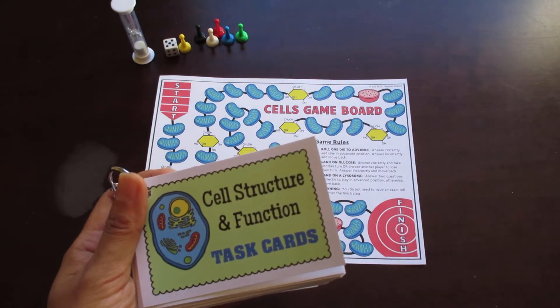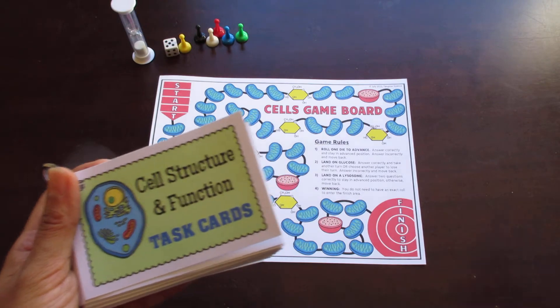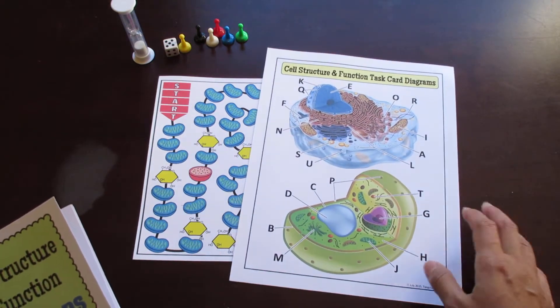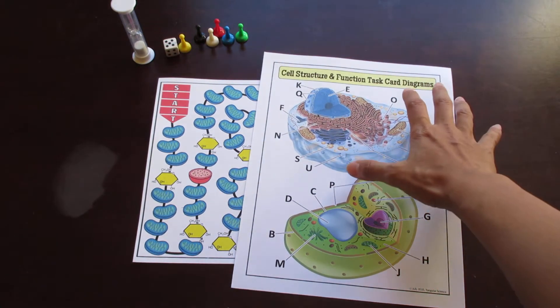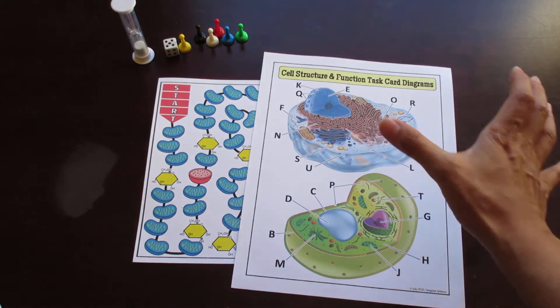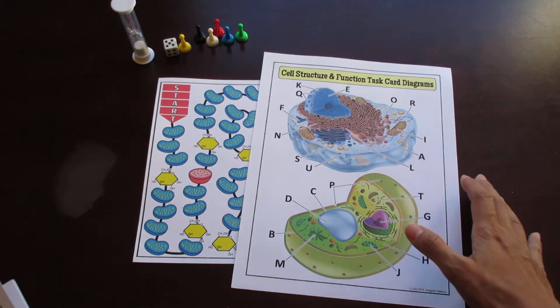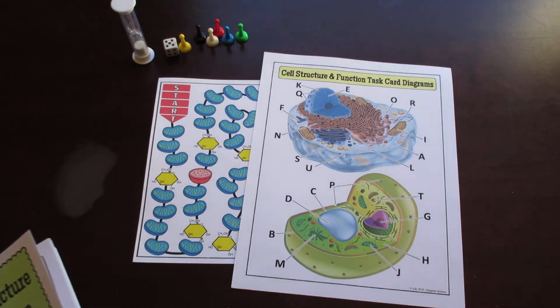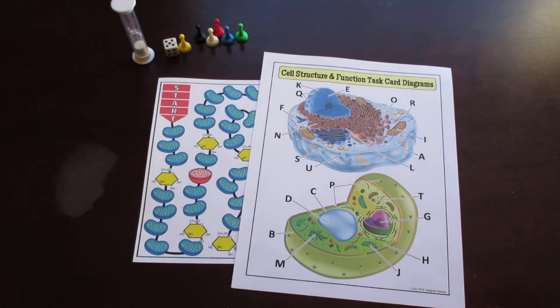Some of the task cards require that students answer questions based on this diagram that I have provided with the documents. It contains the full animal cell and plant cell diagram with the labels, so that some questions might say locate structure N.